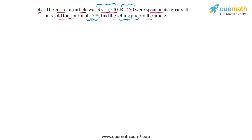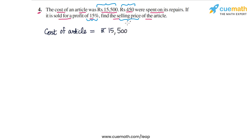Let's write the information given. The original cost of the article is rupees 15,500. Rupees 450 were spent on repairs, so these are overhead expenses. Overhead expenses are rupees 450.